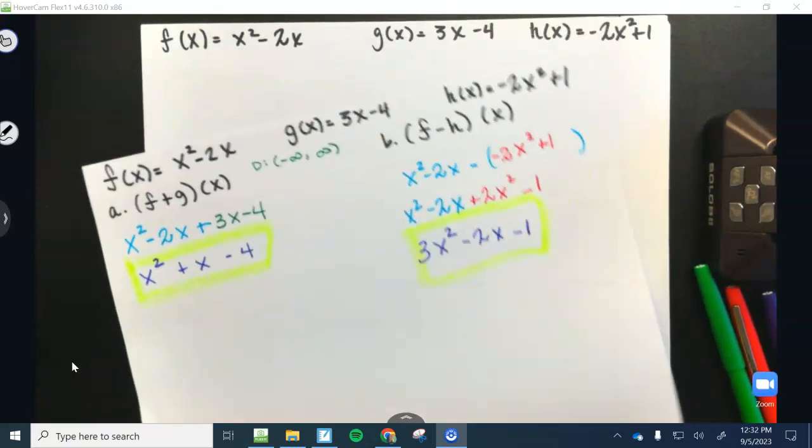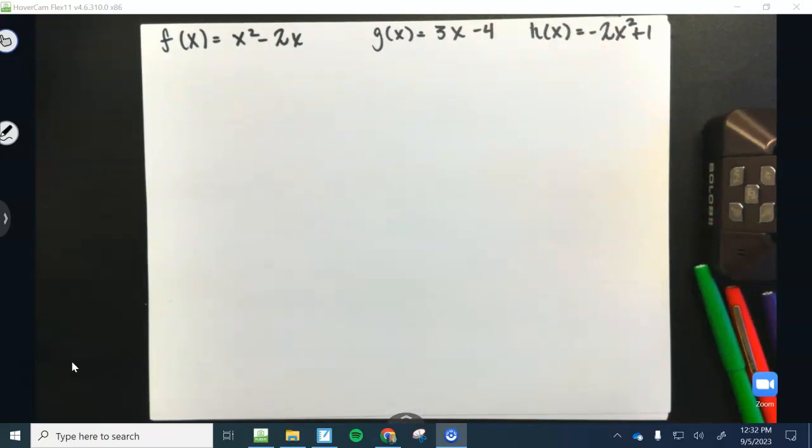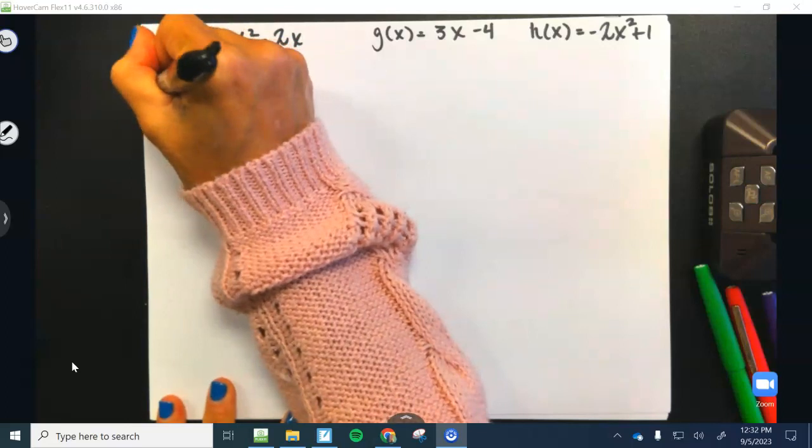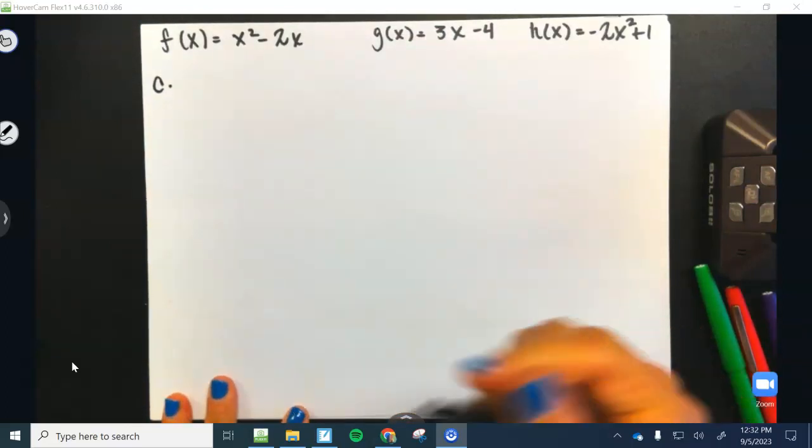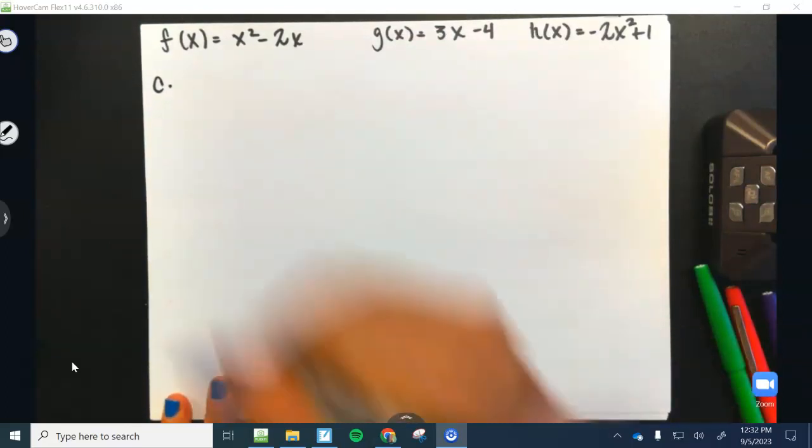So now we're going to take both of these and we are going to multiply them and divide them. And I did not write this down, guys. So A was add, B was subtract. What did C say in your packet? F and G. Okay, thank you.